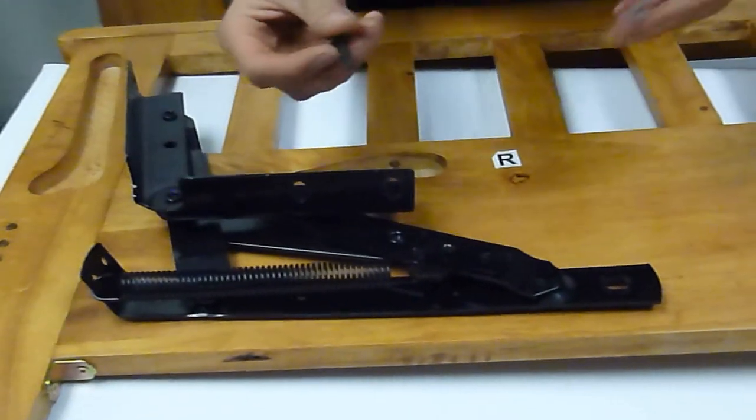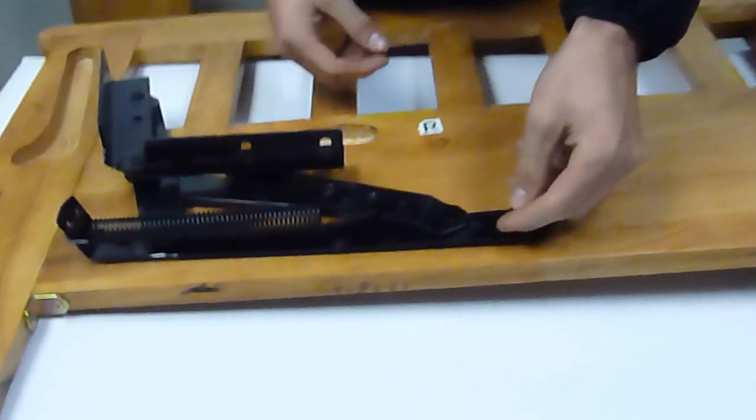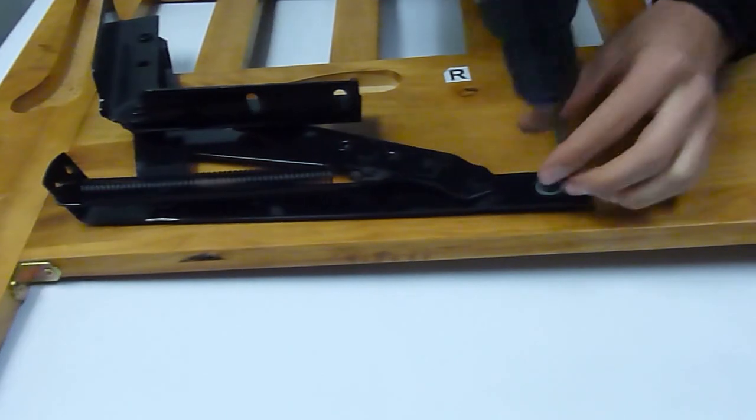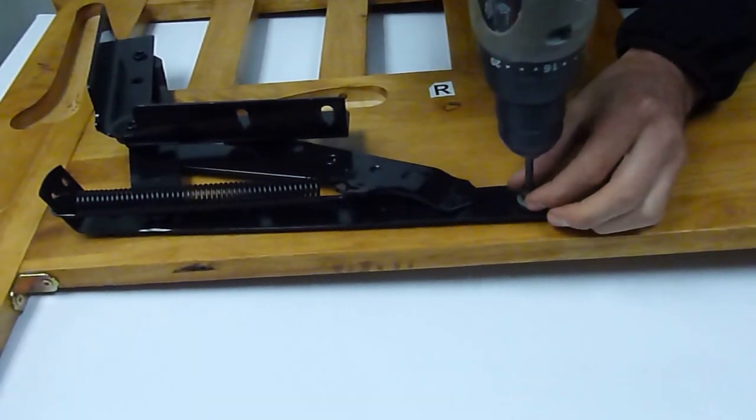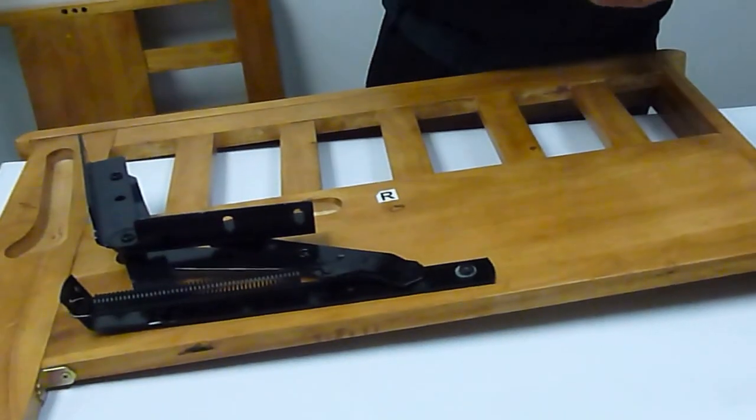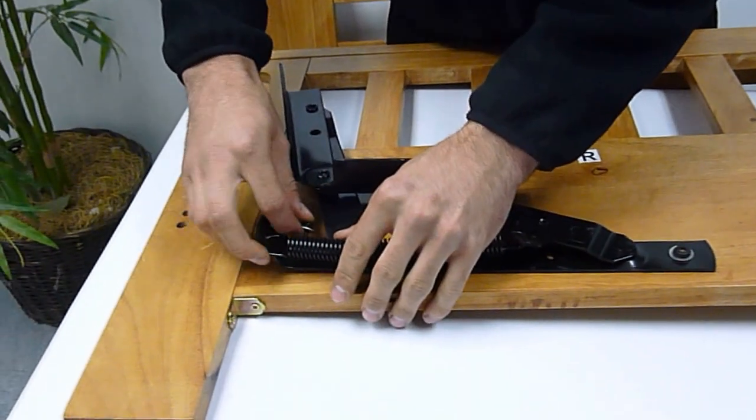Again, one inch medium bolt, black lock washer, large silver washer, right in the hole there. Same thing on the back side of the hinge.